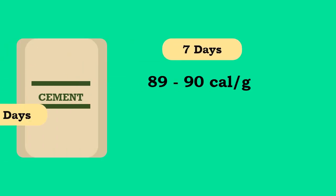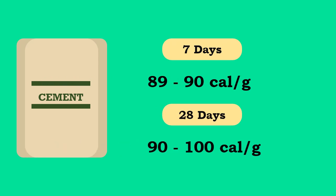Normally, ordinary Portland cement produces 89 to 90 calories per gram in seven days and 90 to 100 calories per gram in 28 days.